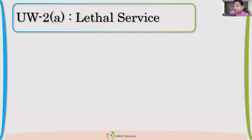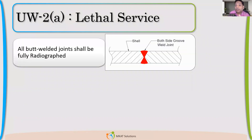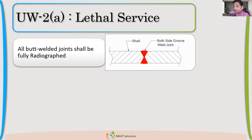If lethal service is mentioned, then as a designer, what we have to be careful about is that all the butt-welded joints shall be fully radiographed. Whatever joints we have in this pressure vessel shall be fully radiographed — that is the requirement. That has to be mentioned in the drawing, because the drawing is the final output. If you don't mention it in the drawing, it will get missed; if you only mention it in the data sheet, nobody refers to that. So 100% radiography is required.